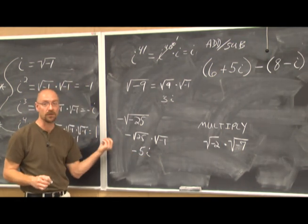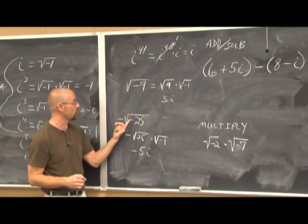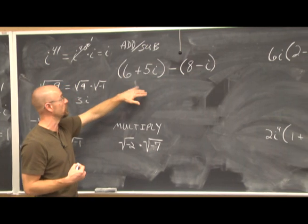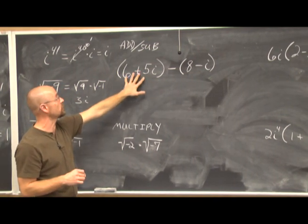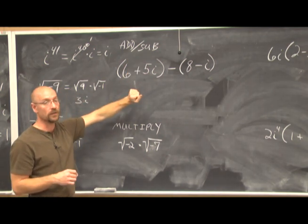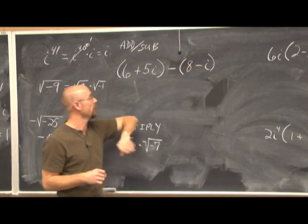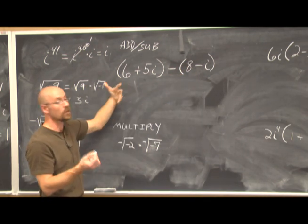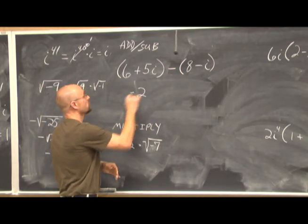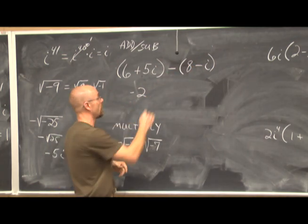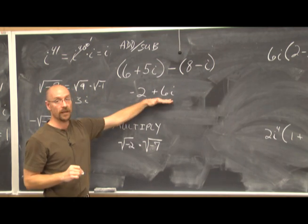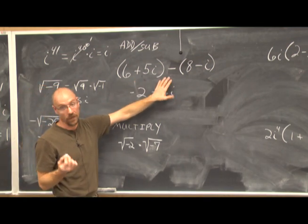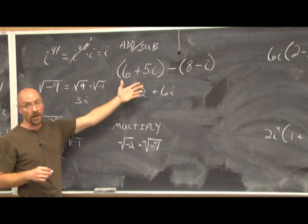When working with radicals, we can always pull out i whenever we see a negative under the radical. For adding or subtracting complex numbers, the rules of math never change — just follow them like binomials. Distributing the negative gives negative 8 and positive i. Combining like terms: 6 and negative 8 give negative 2; 5i minus negative i gives 6i. Written in a plus bi form: negative 2 plus 6i.